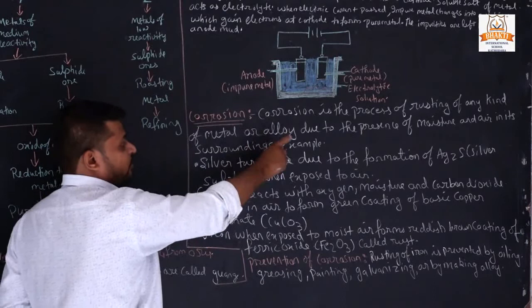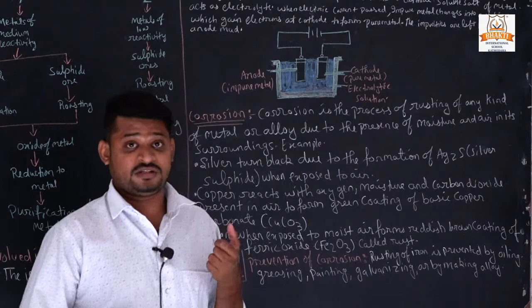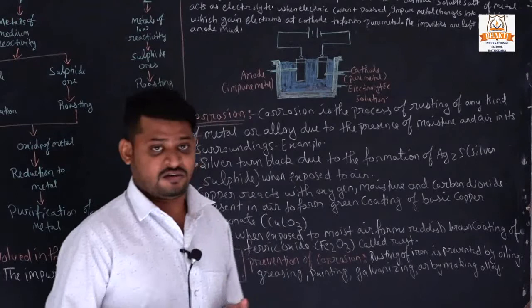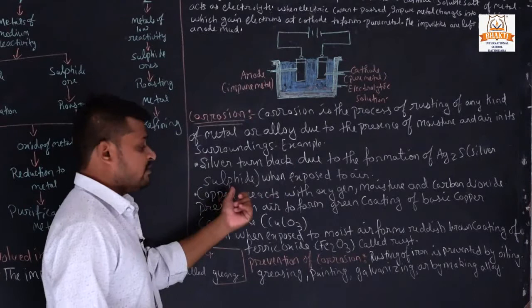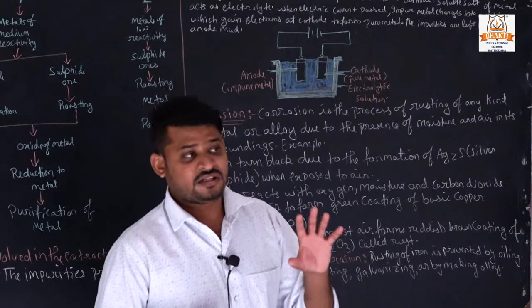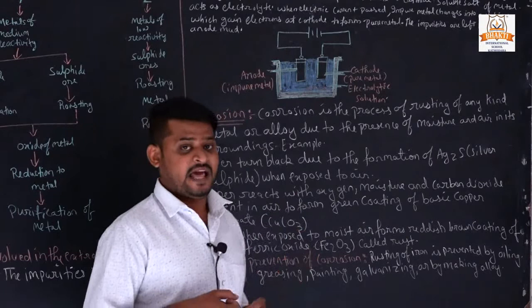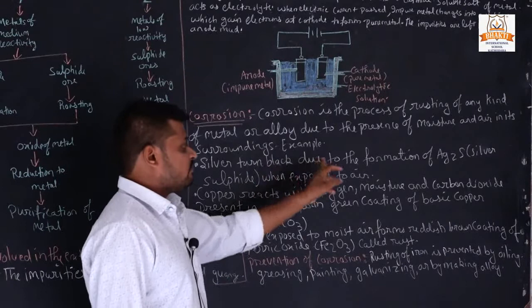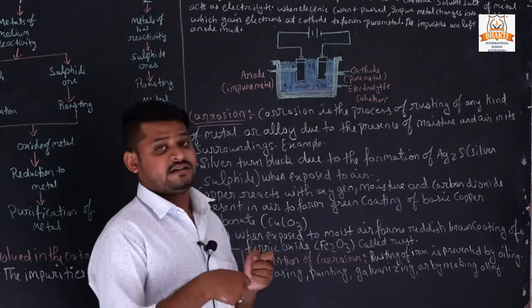Some examples of corrosion: silver turns black due to the formation of Ag₂S (silver sulphide). When we wear silver jewellery, after some time the surface gets covered with a black layer. This happens because silver reacts with oxygen in the air and converts to silver sulphide — that is corrosion. Copper reacts with oxygen, moisture, and carbon dioxide; its color changes to green because copper carbonate forms on the surface of the copper — that is also corrosion.